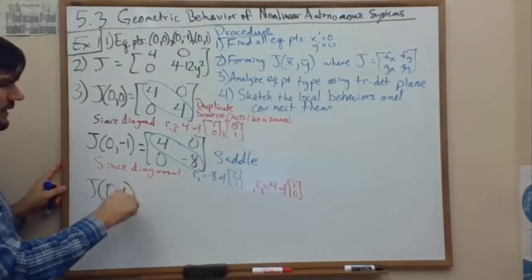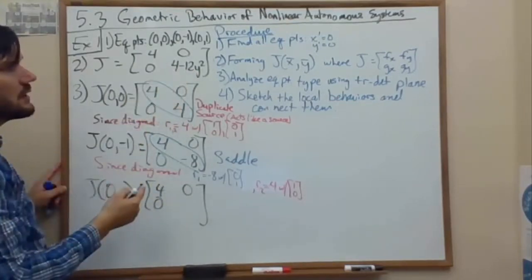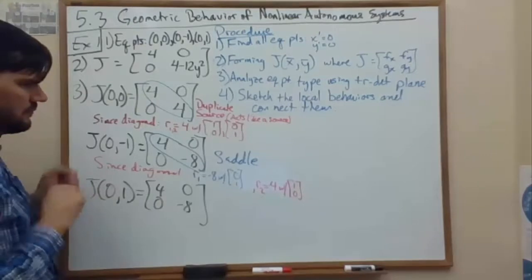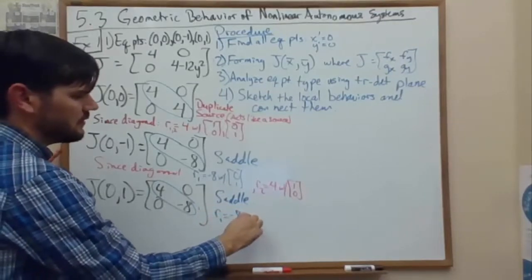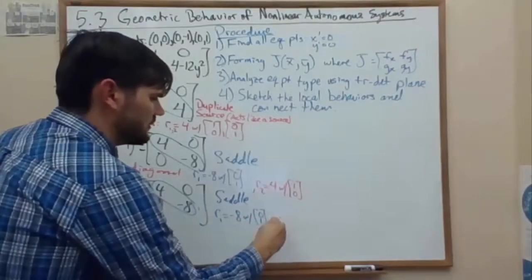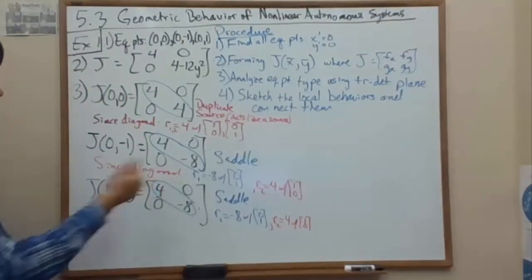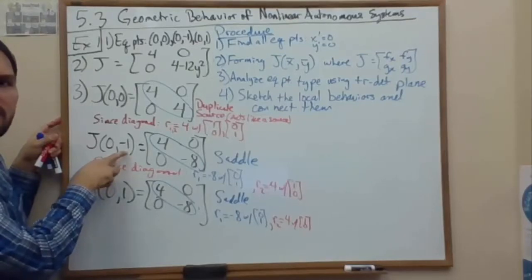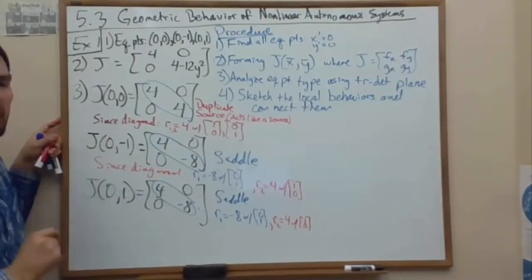Last equilibrium point, (0, 1). Plugging in y = 1: 4 − 12(1) = −8. This is the exact same matrix as the (0, −1) case, which means it's also a saddle with eigenvalue −8 in the y-direction (stable, pulling in) and eigenvalue 4 in the x-direction (unstable). So we have the same type of behavior at (0, −1) and (0, 1).